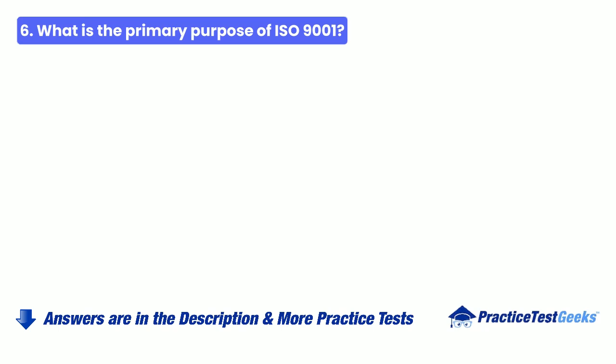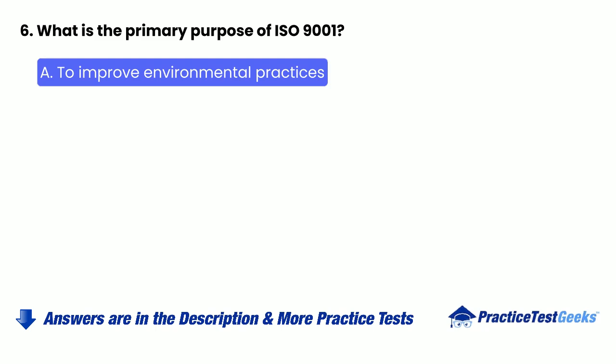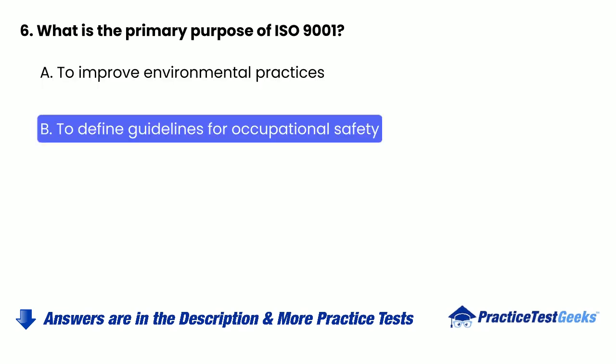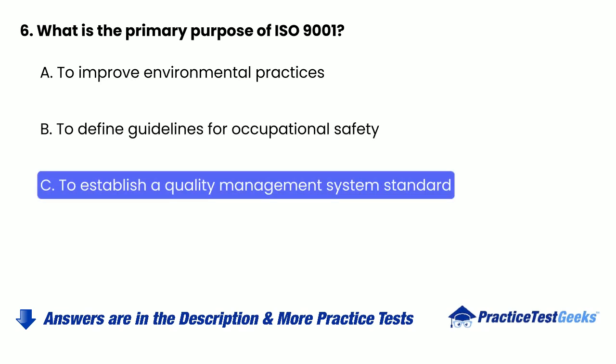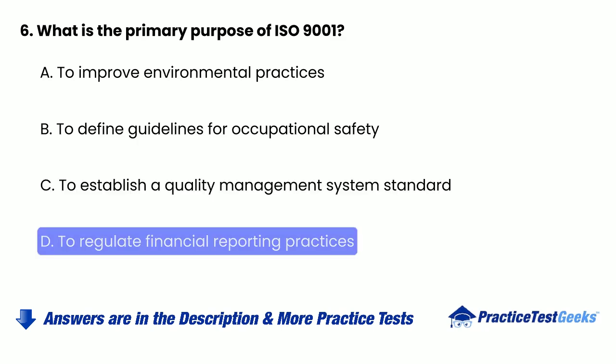6. What is the primary purpose of ISO 9001? a. To improve environmental practices. b. To define guidelines for occupational safety. c. To establish a quality management system standard. d. To regulate financial reporting practices.